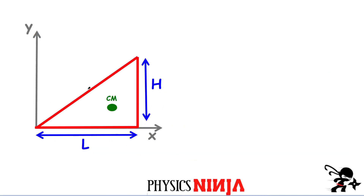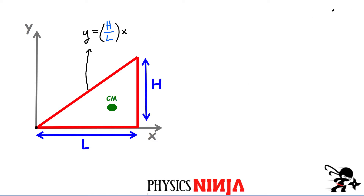To start this off, we're first going to find what is the equation for the hypotenuse of our triangle. It should be a slope multiplied by X, and since this goes through the origin, there's no offset. The slope is simply the rise over the run, which is H over L — that's constant. This is super important because it tells me the height of that line for every value of X.